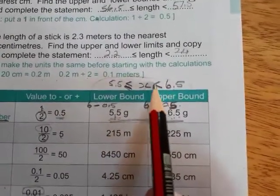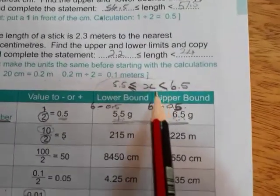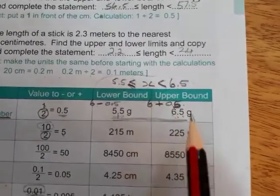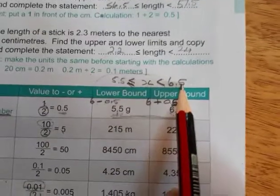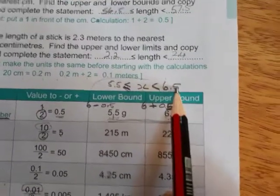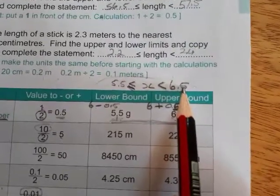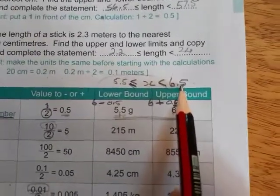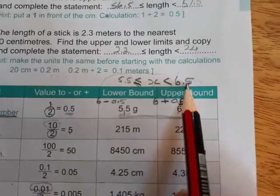And on the other side, you have less than, and no equal to. Important. 6.5, if we round that to the next whole number, it will become 7. So 6.5 is not included, but everything that is smaller than 6.5 is included. So let's go through the next two examples.